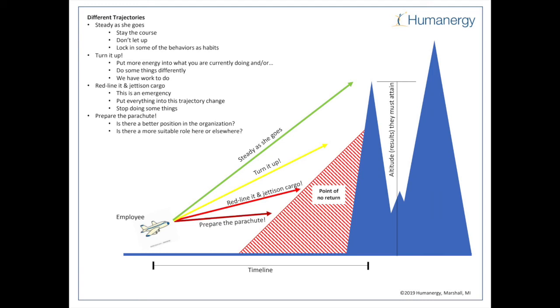When I draw this picture out for people, I find it really helps when addressing performance issues because we can be clear about what we're actually seeing. There's a big difference between prepare the parachutes and just turn it up. Being clear about that and what those behaviors and attitudes look like on the trajectory is critical when addressing performance issues.